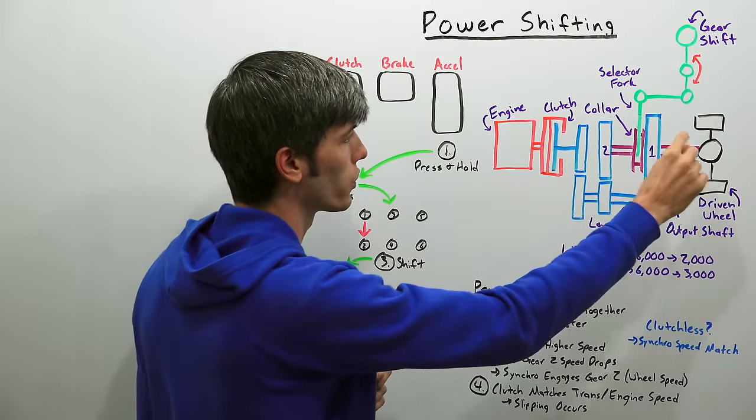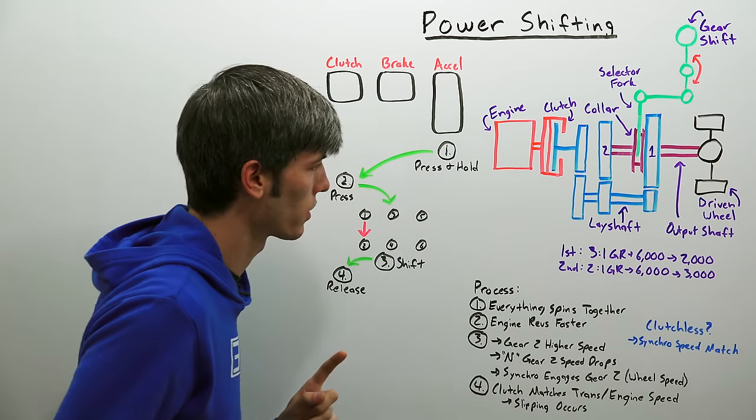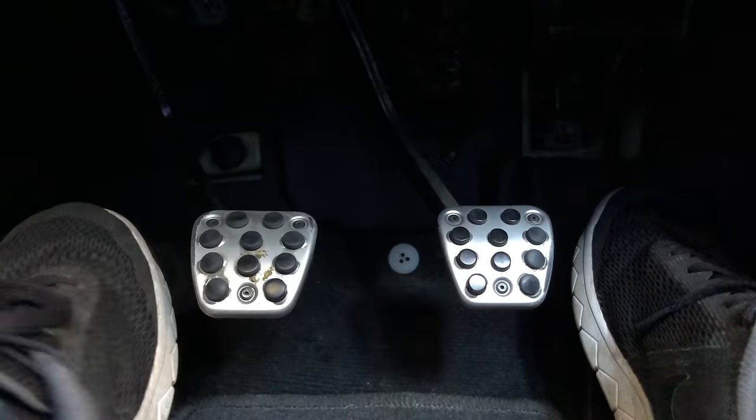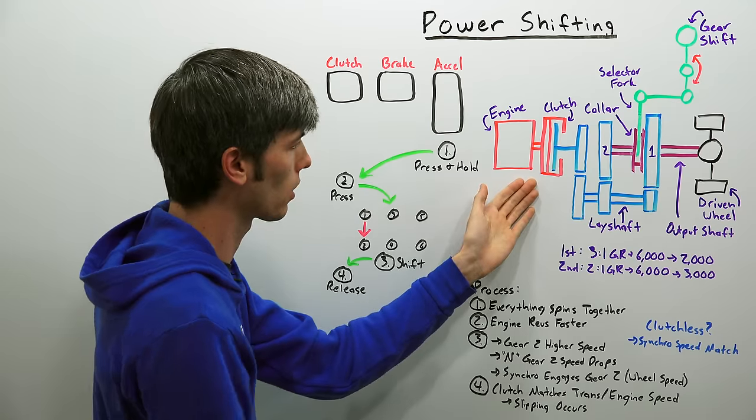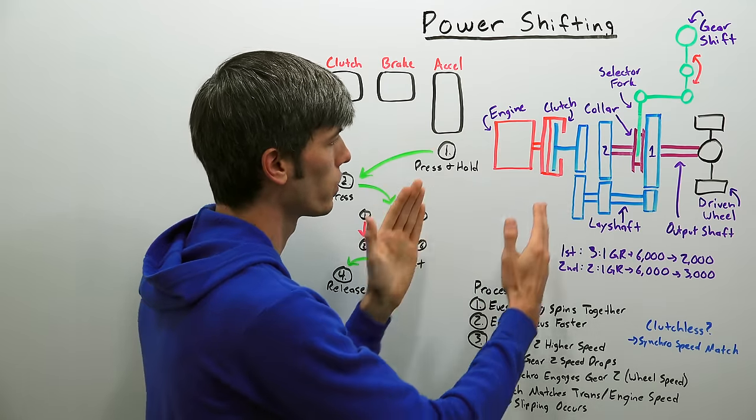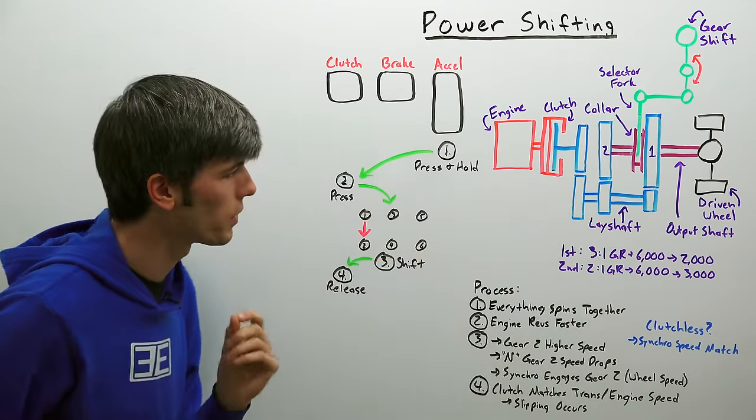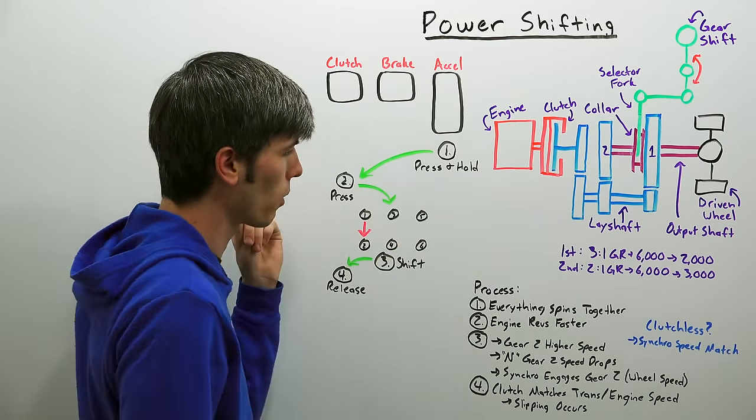So now you've engaged second gear and you have matched your wheel speed to your transmission speed once again. Then the final move, the fourth thing we do is we just let out our clutch pedal and so by releasing our clutch pedal we're re-engaging the engine to the transmission. So here's where we start to run into trouble.